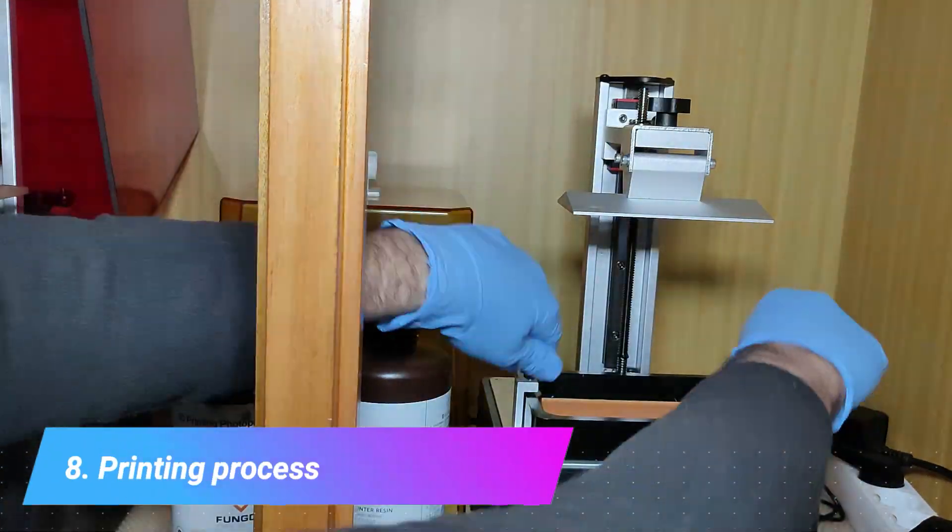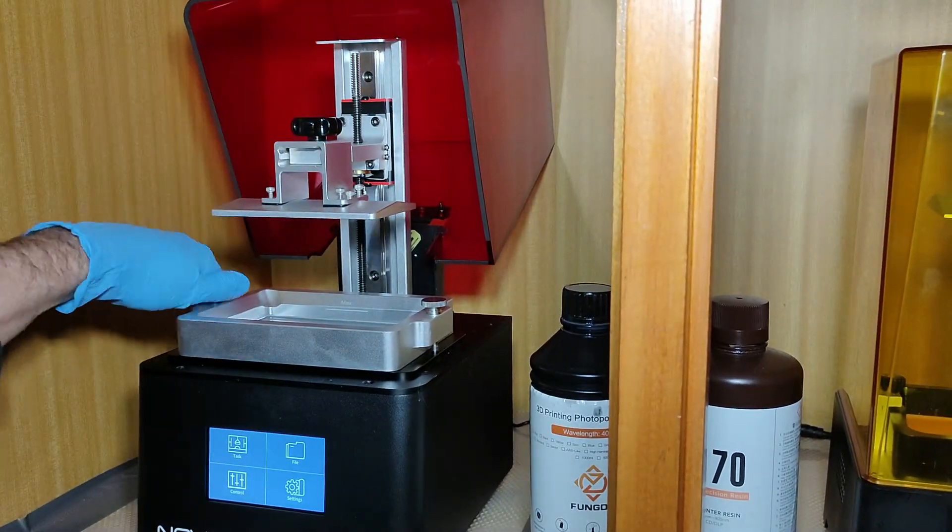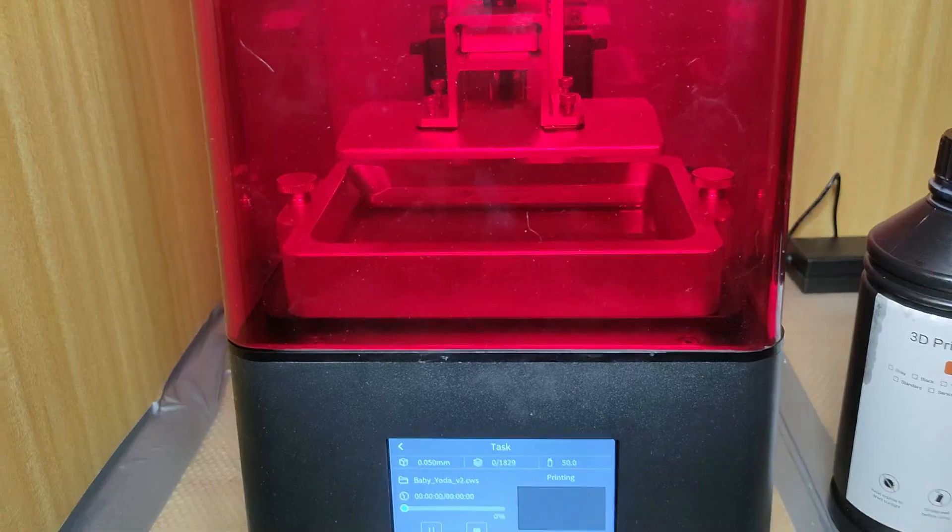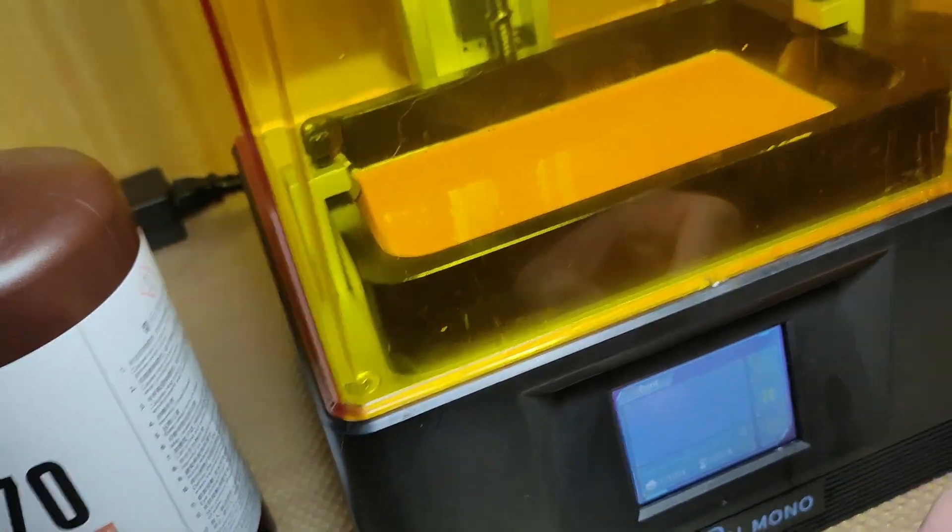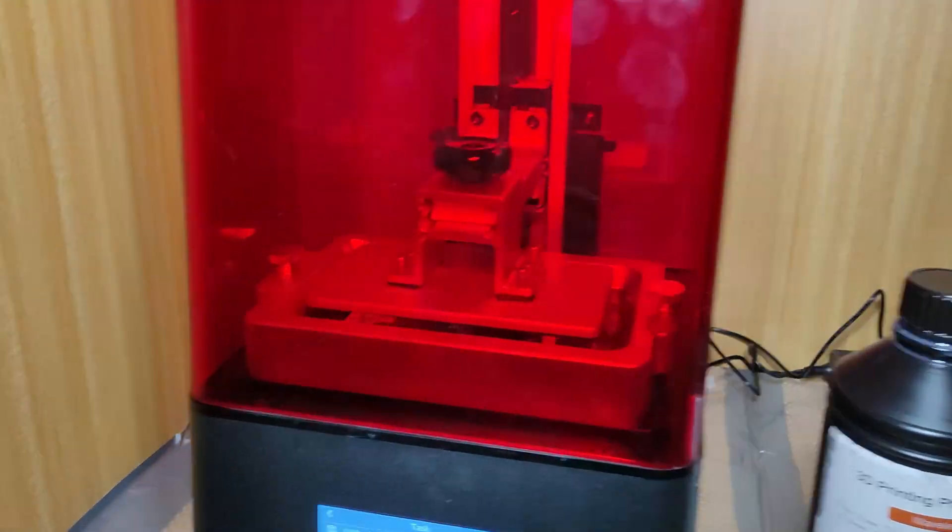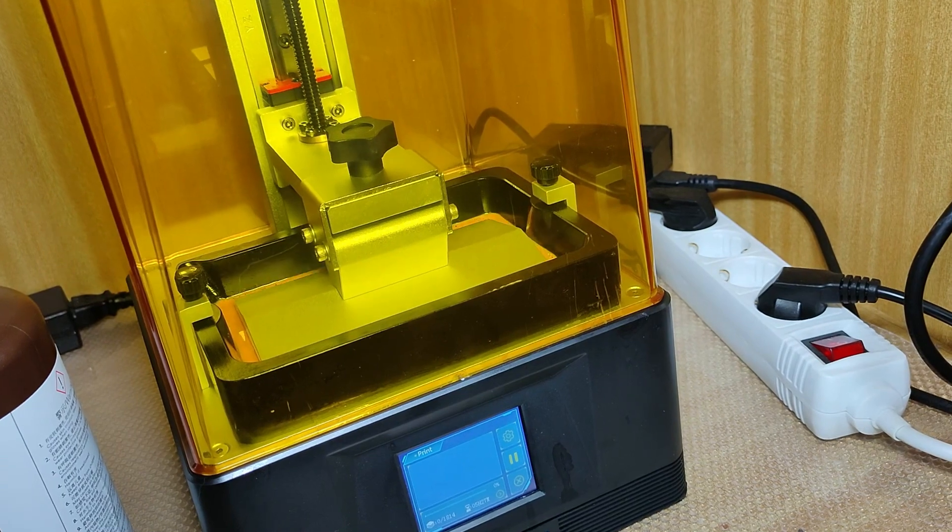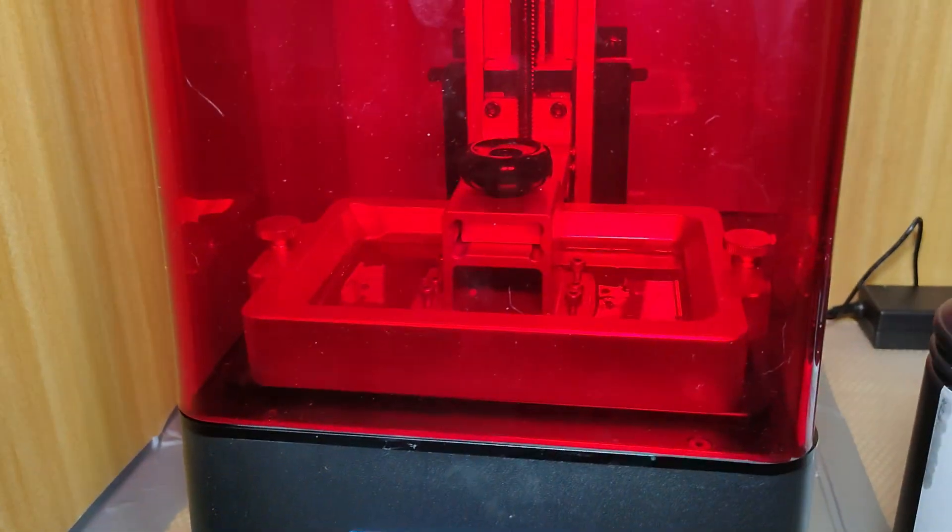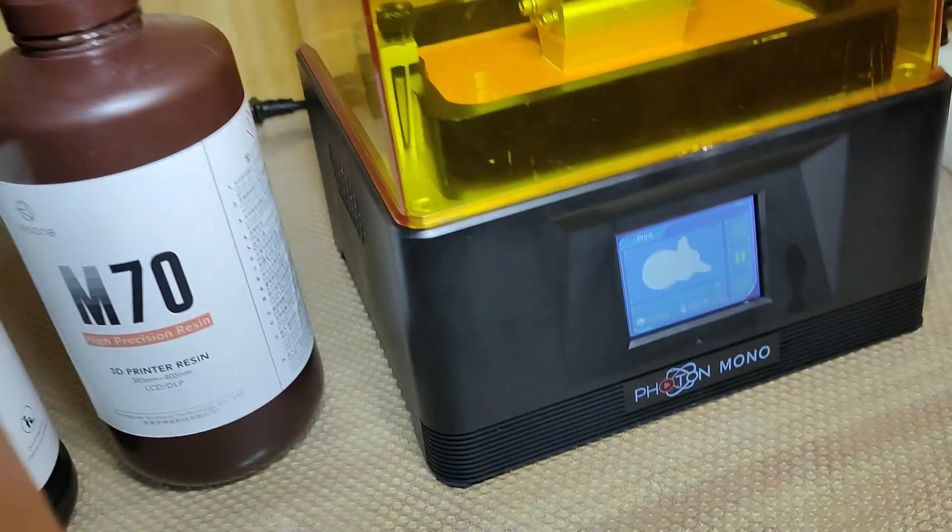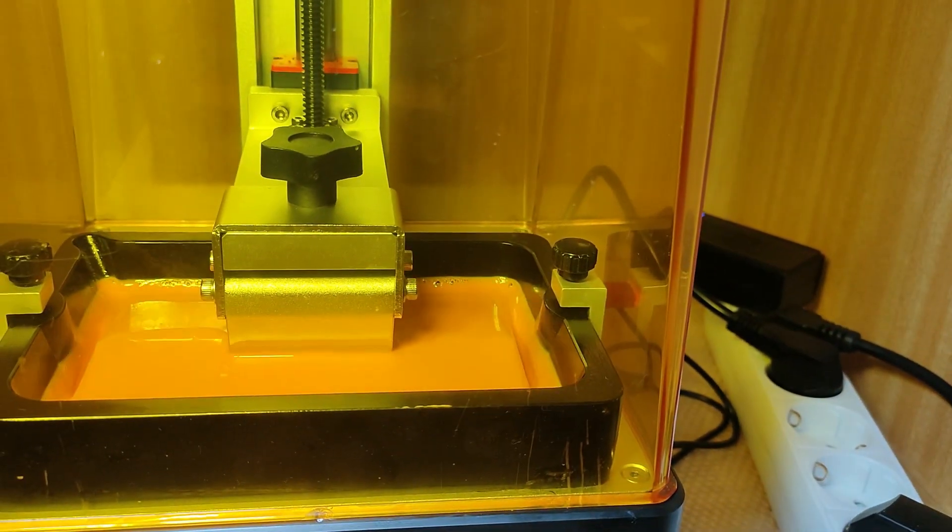Here the print process starts, so it's basically prepare your printer to start to print, you check if everything is in place, you have the resin already in your resin tank, and you start to print, basically that. The build plate will go up, down, and up, and down many times during the printing process. Each time it goes down, it will cure one layer of the model. And it will repeat that many times over during the process.